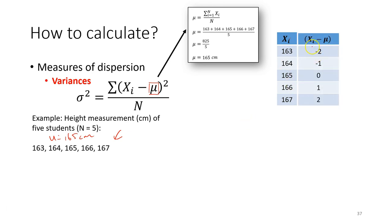After that, you calculate the second value, which is each of this value minus the mean, which is 165, and you get the product. Then after that, take this value and square it. In this case, negative 2 when I square it is 4, negative 1 if I square it is 1, 0 is 0, 1 becomes 1, 2 becomes 4.